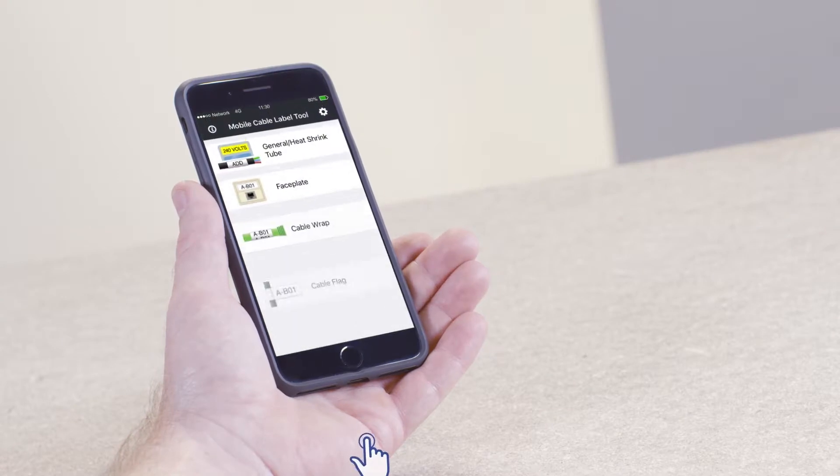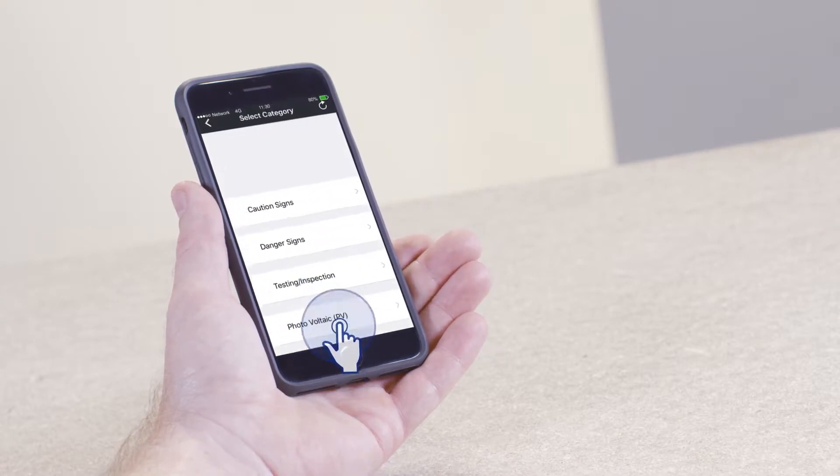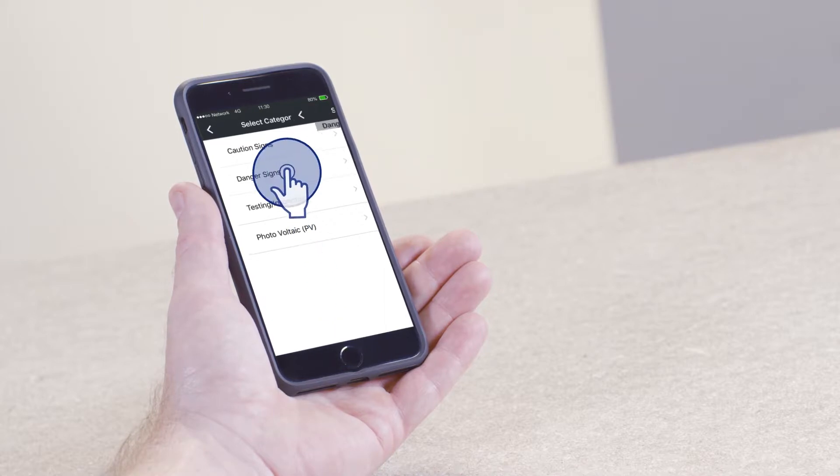From the main menu, tap the Danger Caution Sign option. Now, tap on Danger Signs.